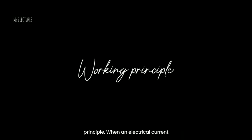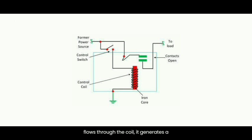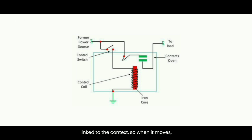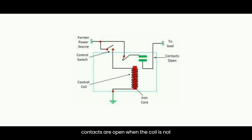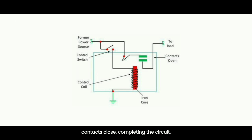When an electrical current flows through the coil, it generates a magnetic field that attracts the movable armature. The armature is mechanically linked to the contacts, so when it moves, the contacts also move. In a normally open (NO) relay, the contacts are open when the coil is not energized; when energized, the armature moves and the contacts close, completing the circuit. In a normally closed (NC) relay, the contacts are closed in the unenergized state and open when the coil is energized.